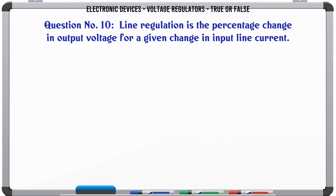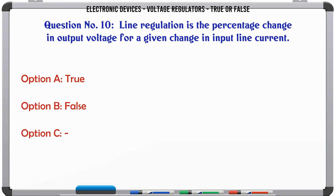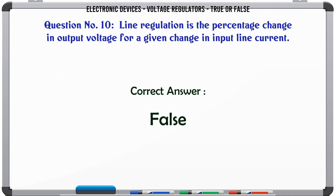Line regulation is the percentage change in output voltage for a given change in input line current. A. True. B. False. The correct answer is: False.